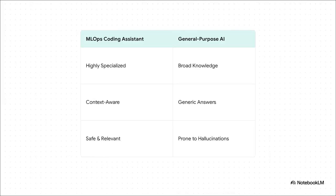And for those moments when you do get stuck, the course comes with a specialized MLOps coding assistant. Unlike a general-purpose AI that might give you a generic or even totally misleading answer, this assistant is fine-tuned specifically on the course material. It's context-aware, it understands the projects you're working on, and it gives you safe, relevant answers grounded in the best practices you're actually learning.